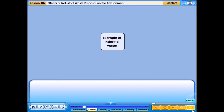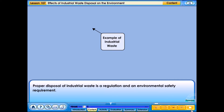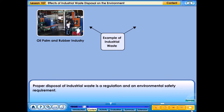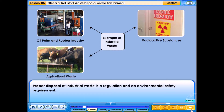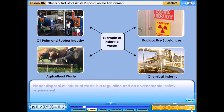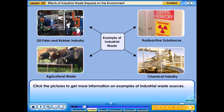Proper disposal of industrial waste is a regulation and an environmental safety requirement. Click the pictures to get more information on examples of industrial waste sources.